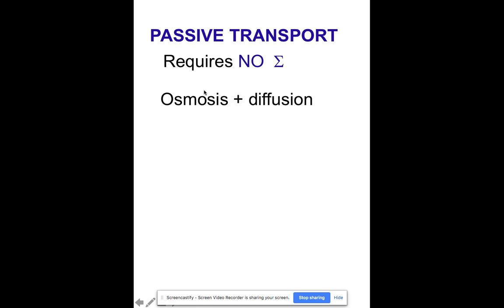And two different types of passive transport are osmosis and diffusion. Osmosis is the movement of water. Diffusion is when you just have other molecules moving across a membrane. Or you can have molecules moving through the air, like perfume. And what happens is that the passive transport just moves with what we call the concentration gradient. So, passive transport relies on just the universe and its norm.